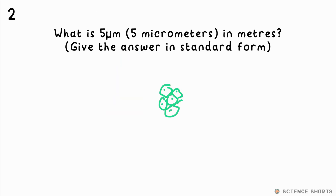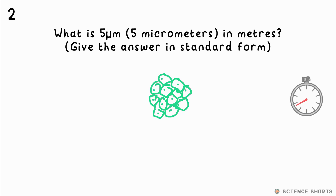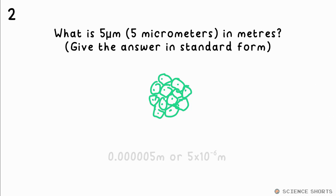In standard form, what is 5 micrometers when converted to meters? It's 5 × 10⁻⁶ meters. That's because micro means times 10 to the minus 6, or a millionth.